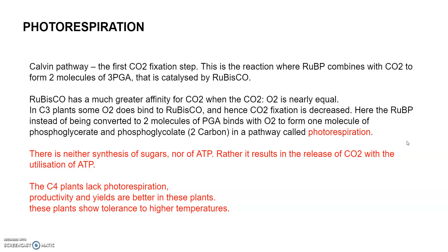Photorespiration is a light-dependent process of the oxygenation of ribulose bisphosphate, releasing carbon dioxide by the photosynthetic organs of the plant. In the Calvin pathway, the first carbon dioxide fixation step involves ribulose bisphosphate combining with carbon dioxide to form two molecules of 3-PGA, catalyzed by RuBisCO. Photorespiration decreases the rate of photosynthesis when oxygen concentration increases from two to three percent to twenty-one percent, and the presence of light and higher oxygen concentration results in the binding of RuBisCO to oxygen.